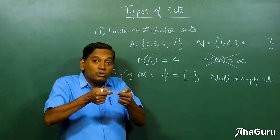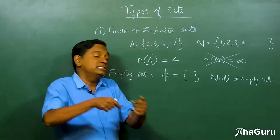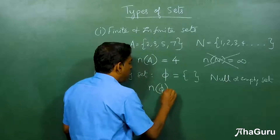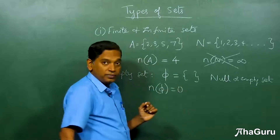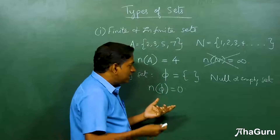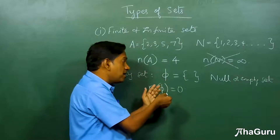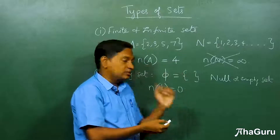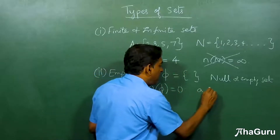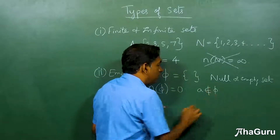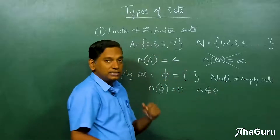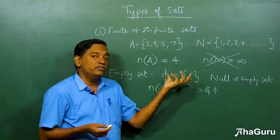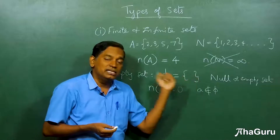We can say n(φ) = 0. There is no element which is a member of the null set — any number, any letter, any object will not be a member of the null set.